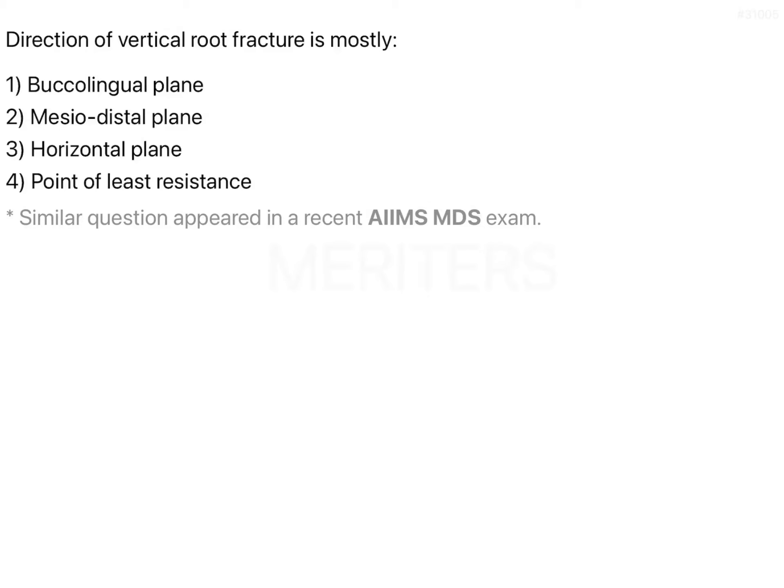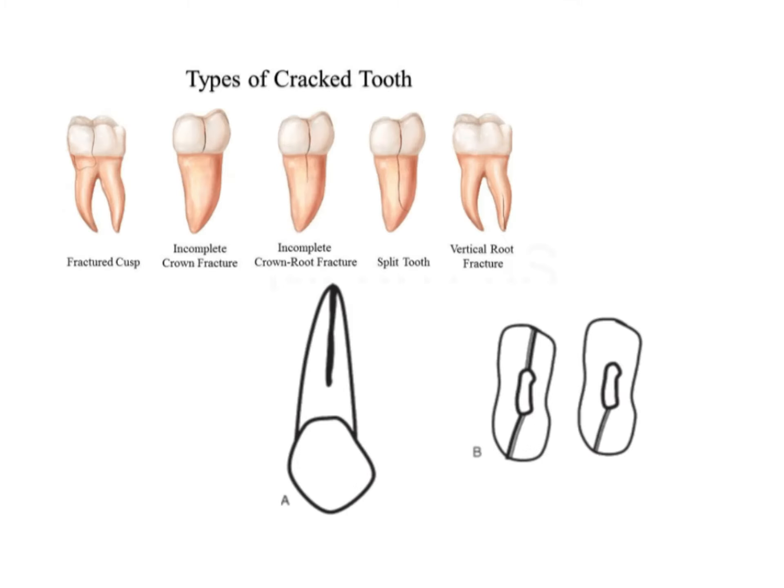The question is: what is the direction of vertical root fracture with least resistance? The options are buccolingual, mesiodistal, and horizontal planes. Before we dive into the direction of root fractures, let's first talk about the different types of fractures that occur in teeth.